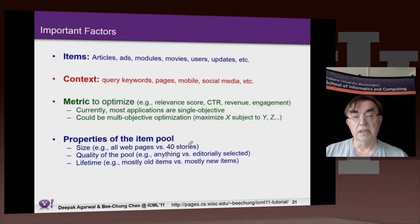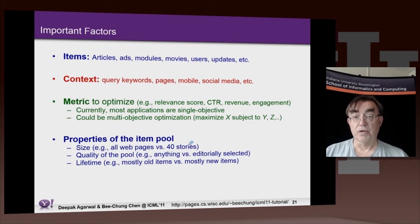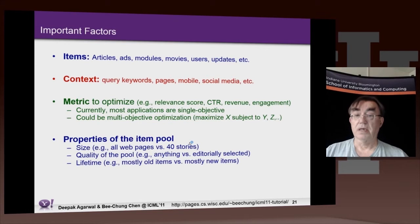These are the issues brought together in recommender systems — these different items which are involved, which include media, movies, articles, advertisements, the users, and so on. We have the context, which might be whether we're coming from a mobile or a desktop.